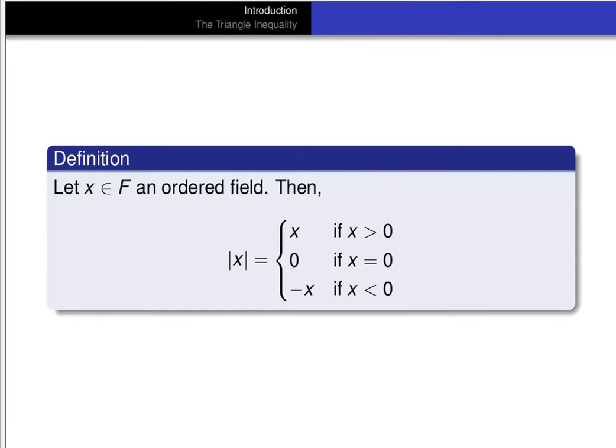Let's first review the definition of an absolute value. If x is an element of an ordered field f, then the absolute value of x is x if x is greater than 0, 0 if x is equal to 0, and the additive inverse of x if x is less than 0.